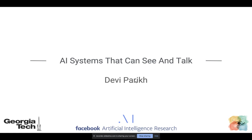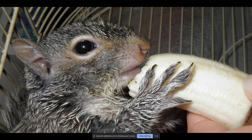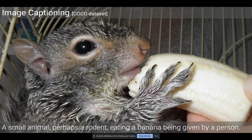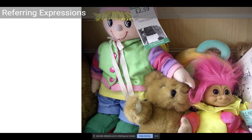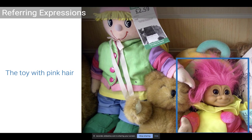I don't know at the time of this recording what the Q&A format is going to look like at the workshop, but if there is one, I look forward to seeing you there. Today I'm going to tell you about AI systems that can see and talk — systems that can take an image and automatically describe it in a sentence, or take individual chunks from an image and describe those in short phrases, or take a short phrase as input and show you where in the image that particular object or relevant region is.